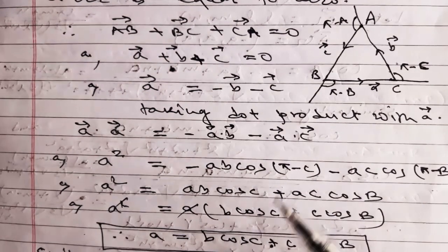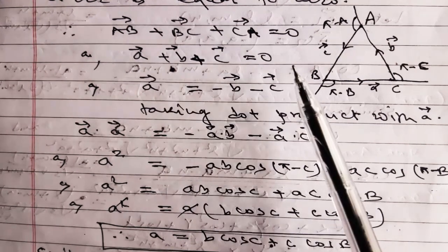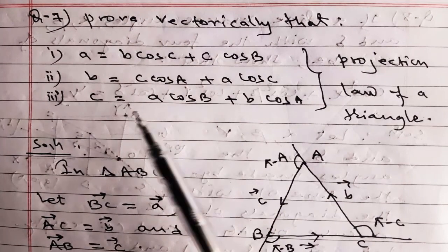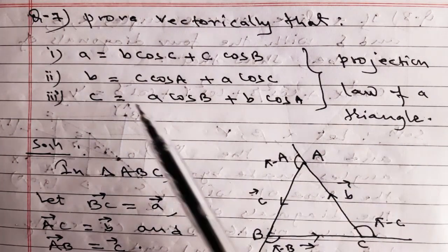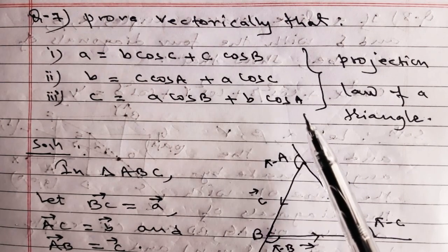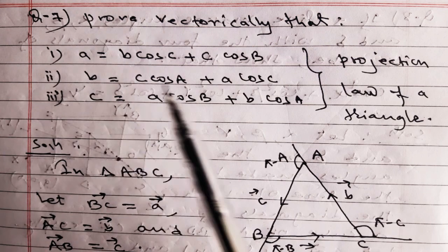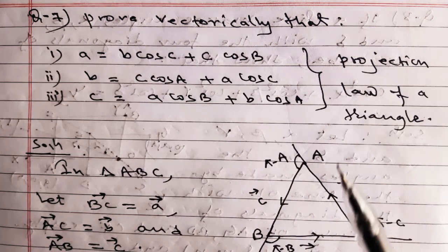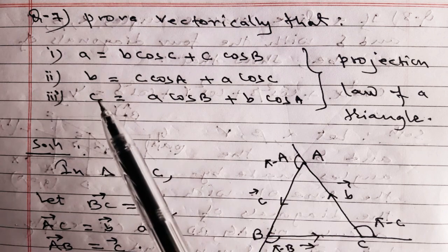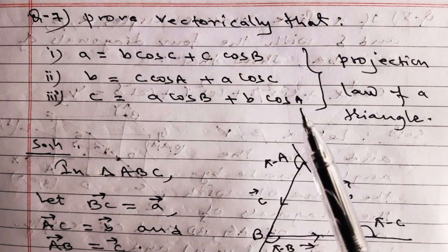Similarly, by solving A + B + C = 0 for vector B we get the second projection law: b = c·cosA + a·cosC. And solving for vector C we get the third: c = a·cosB + b·cosA. Thank you for watching this video.